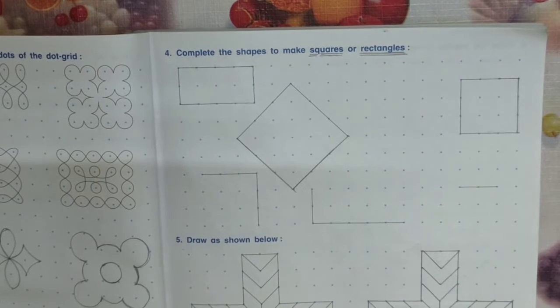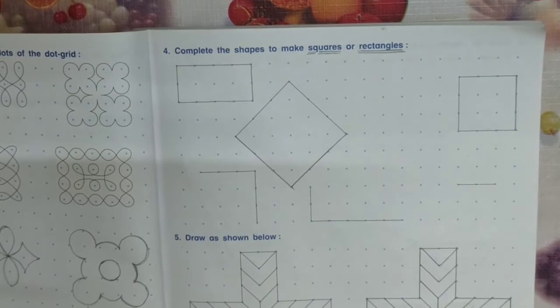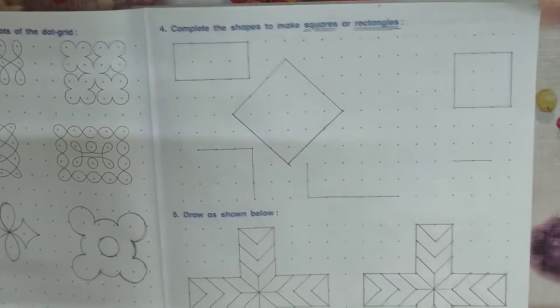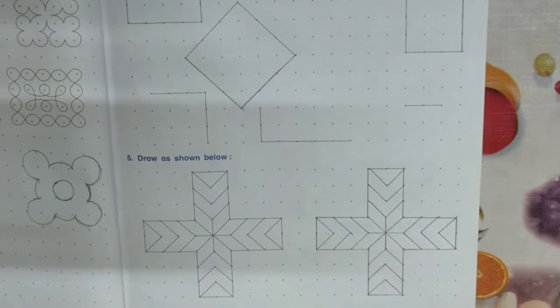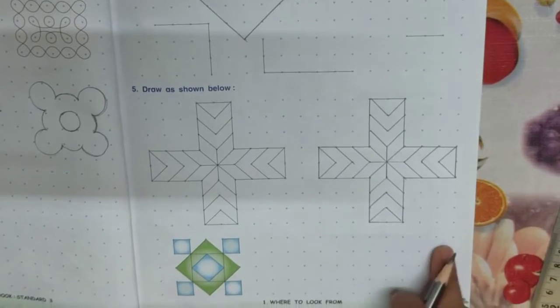Similarly, you have to draw this one. Now another is also given. You have to draw this by joining the dots here.